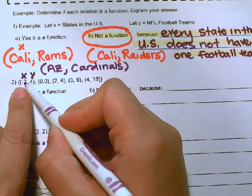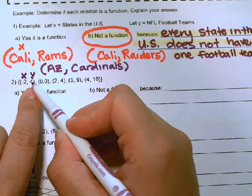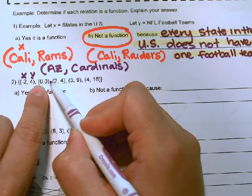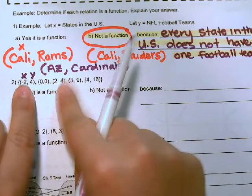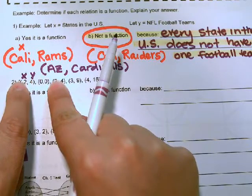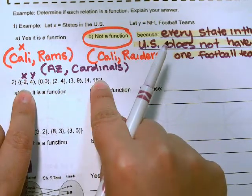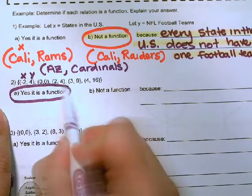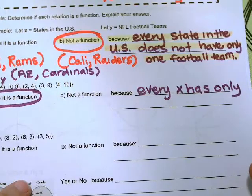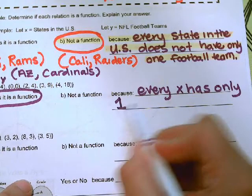Does every X, when X is negative 2, it has one Y value. When X is 0, it only has one Y value. When X is 2, it only has one Y value. It's okay that these are the same. But you can't have these numbers be the same and have two different Y values. So far this all looks good. Yes, it is a function because every X, every first number in the ordered pair, has only one Y.